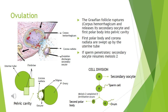At ovulation, the Graafian follicle ruptures and releases its secondary oocyte and first polar body from the ovary into the pelvic cavity. The polar body and the corona radiata get swept up by the uterine tube. If fertilisation does not occur, these cells degenerate. If fertilisation does occur, the secondary oocyte will resume meiosis 2. Once meiosis 2 has been completed, it will split into two cells of unequal size: a second polar body and the ovum.